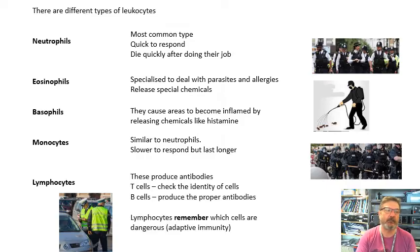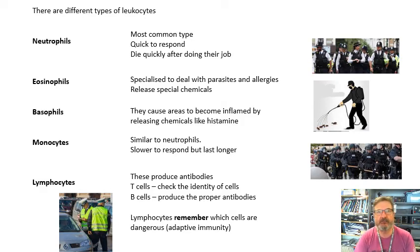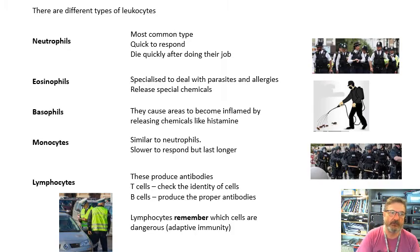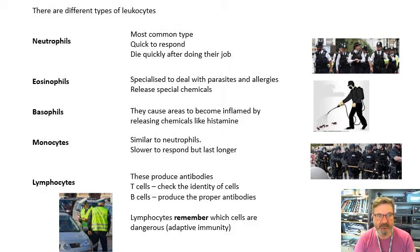Lymphocytes come in two types: T-cells and B-cells. T-cells check the identity of your cells — they go around your blood basically saying 'can I see your papers please?' They check cells to see if they should be there, if they're dangerous. If there is a problem, the T-cells tell the B-cells to produce antibodies to sort it out. So T-cells check your papers, and if there's a problem, the T-cells tell the B-cells to produce loads of antibodies.